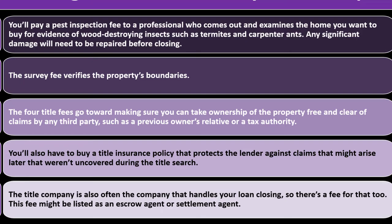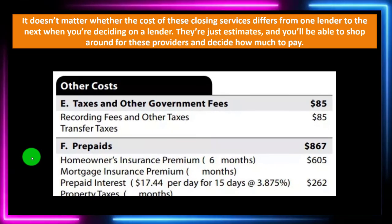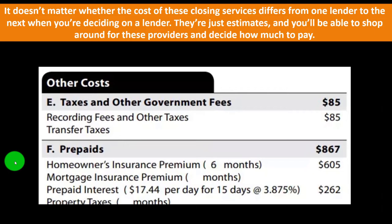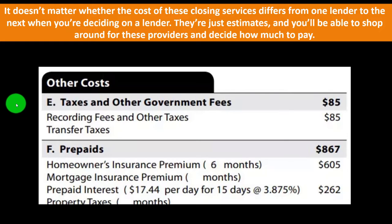You'll also have to buy a title insurance policy that protects the lender against claims that might arise later and weren't uncovered during the title search. The title company is also often the company that handles your loan closing, so there's a fee for that too — sometimes listed as an escrow agent or settlement agent fee. These closing service costs are estimates, and you'll be able to shop around for these providers. Section E covers taxes and other government fees: recording fees, other taxes, and transfer fees.